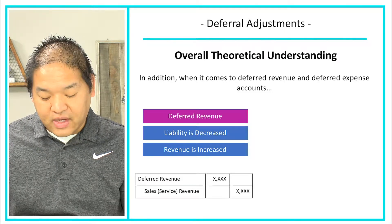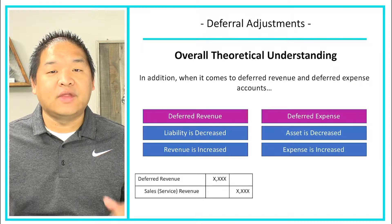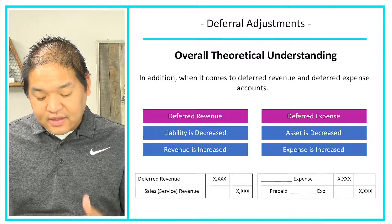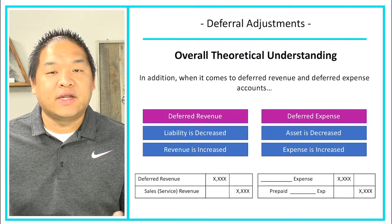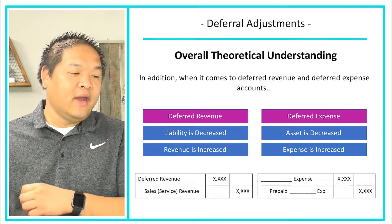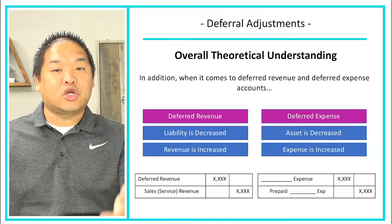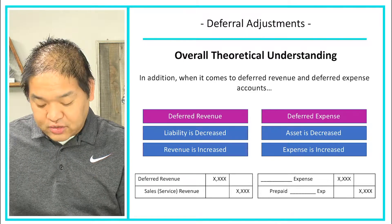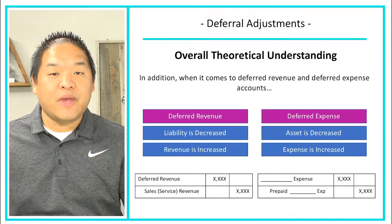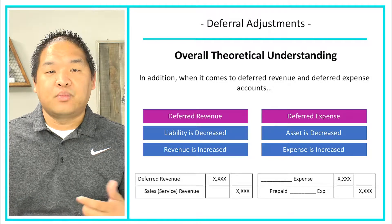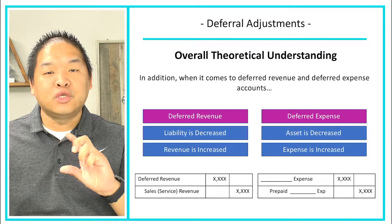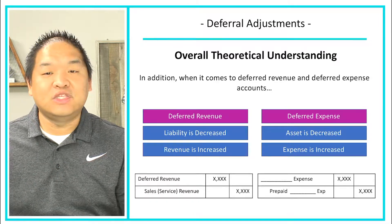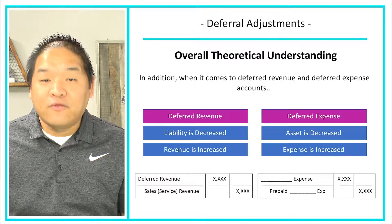For deferred expenses, the asset — the prepaid — is going to decrease, and the expense is going to increase. The journal entry looks like this: we debit the expense, whatever it is — it could be utilities expense, internet service expense, or rent expense. Whatever expense we've now incurred, we debit that. On the credit side, we reduce the asset — the prepaid. So it might be prepaid rent expense, prepaid insurance expense, or prepaid internet service expense. We reverse out that prepaid because now we've used it and incurred the expense. Remember, cash has nothing to do with this because the cash transaction was done as an original entry beforehand.